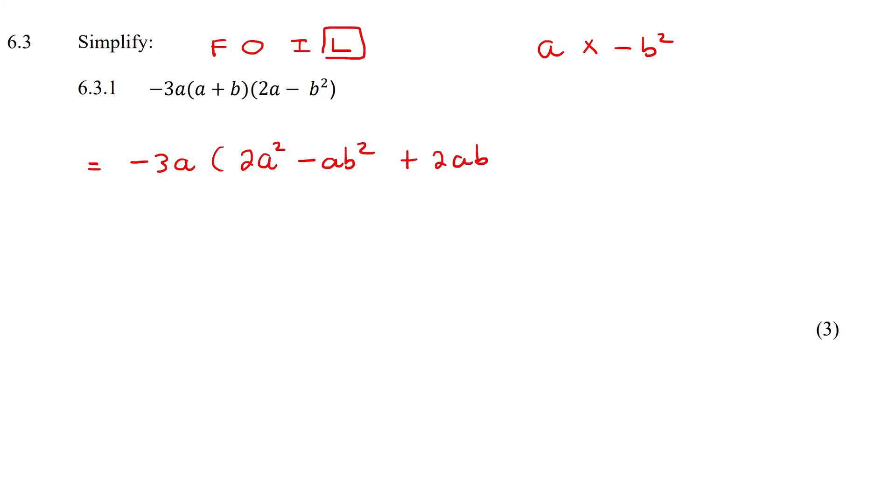And then the L stands for the last. So it's the last one in this bracket and the last one in this bracket. That'll give you -b³ because you're multiplying a negative over here, and b multiplied by b² is b³.